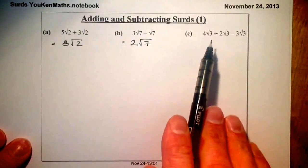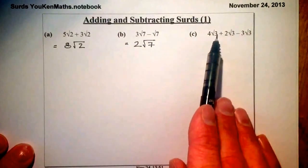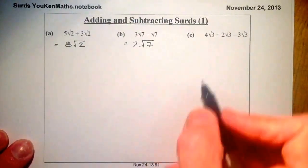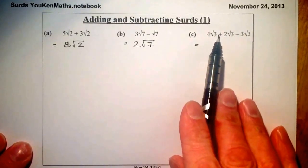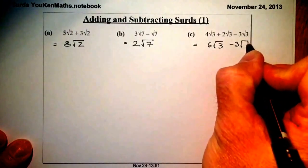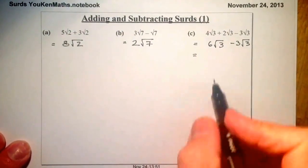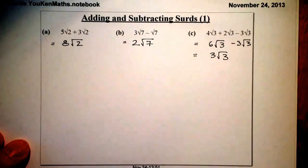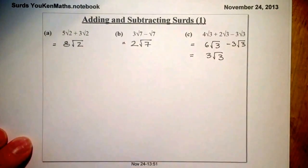Normally you'll see a string of things you've got to add together. In this case, all the roots are the same — it's all root threes — so I just need to gather them up together. I've got four root three plus two root three, which gives me six root three. I've still got to take away three root three from that — six root three take away three root three leaves me with three root three. The really key thing is that the surds have to be the same to be able to add them.